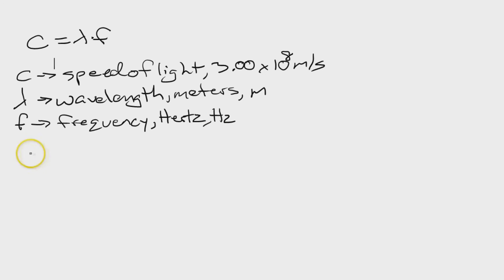The other equation is E equals H times F. E, as we have already mentioned, is energy, which is measured in joules, which is abbreviated with a capital J. Next one up is H. H is another constant. This one, specifically, is Planck's constant.